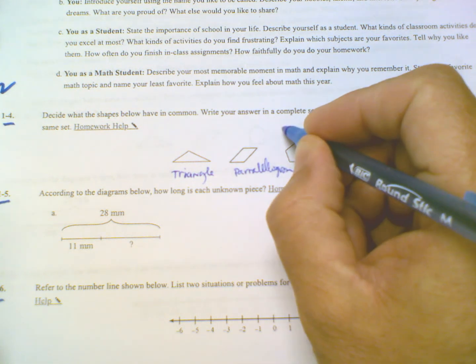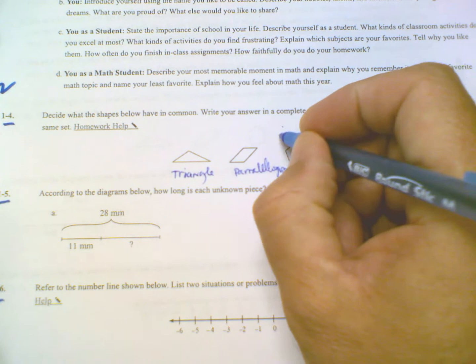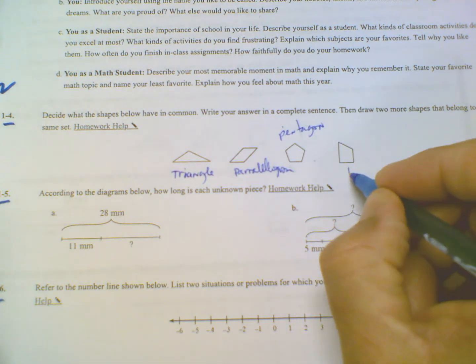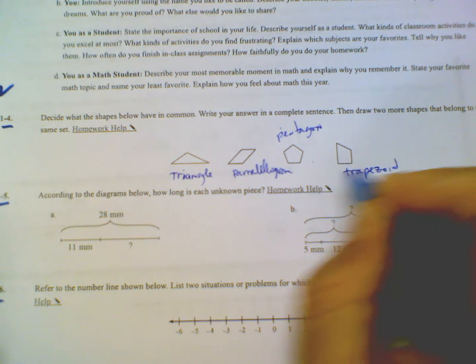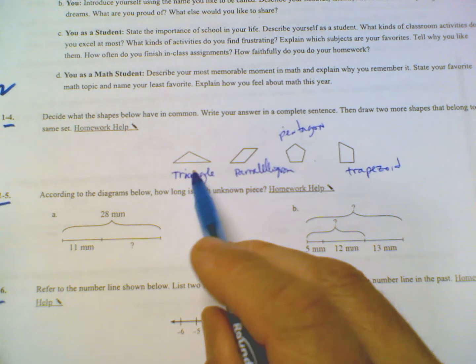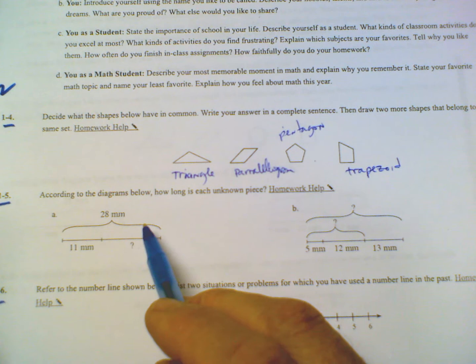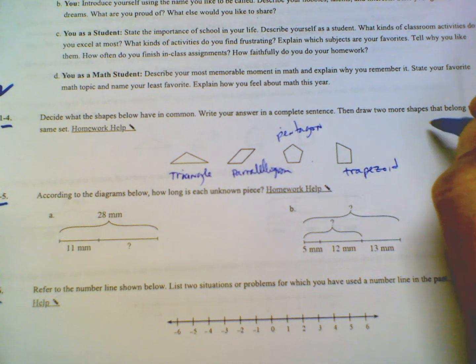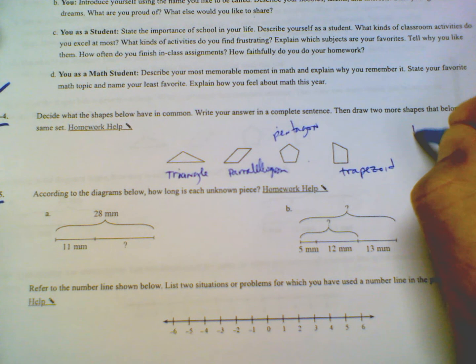This one here looks like a pentagon, and that one is a trapezoid. So they're all different shapes, but one of the things that they all do have in common - they're all part of the family that we know as polygons.